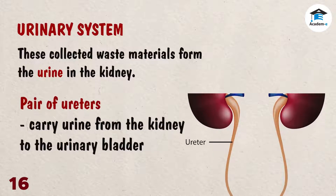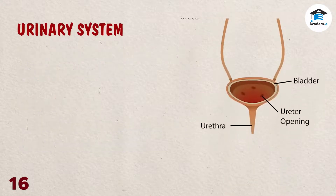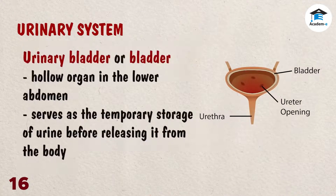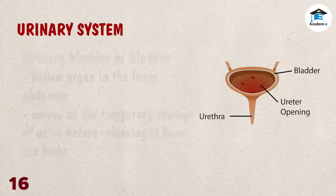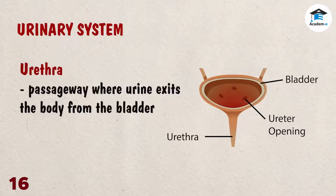The pair of ureters carry urine from the kidney to the urinary bladder. The urinary bladder is a hollow organ in the lower abdomen which serves as the temporary storage of urine before releasing it from the body. The urethra is the passageway where urine exits the body from the bladder.